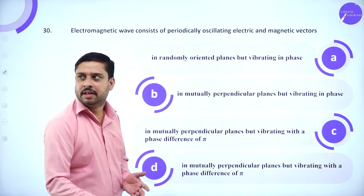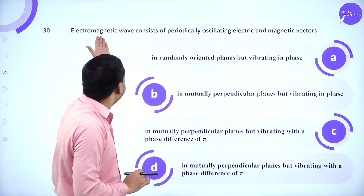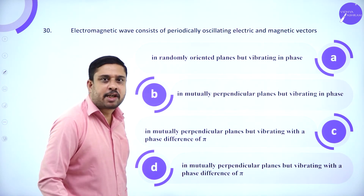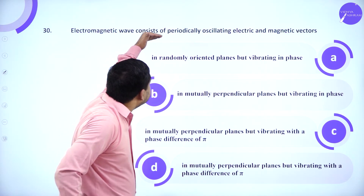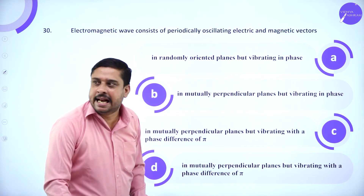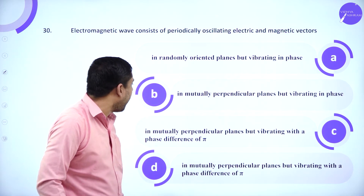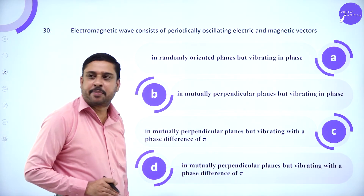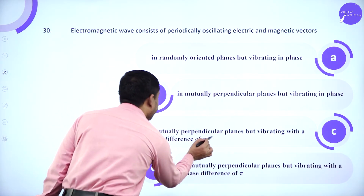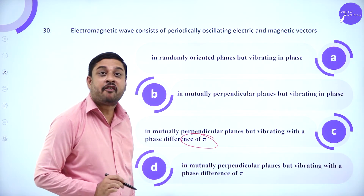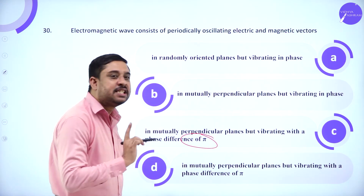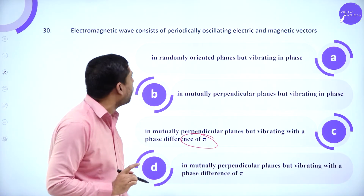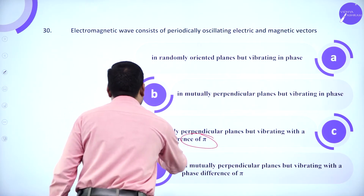Regarding the nature of electromagnetic waves: an electromagnetic wave consists of electric and magnetic vectors which are mutually perpendicular and vibrate with a phase difference of π between them. That is the answer.